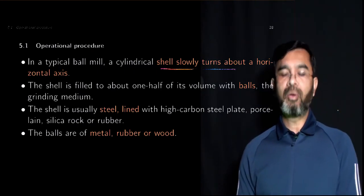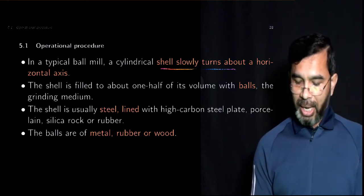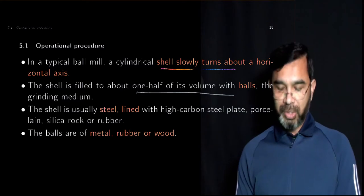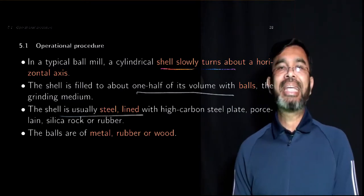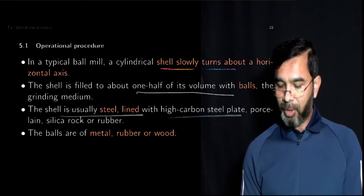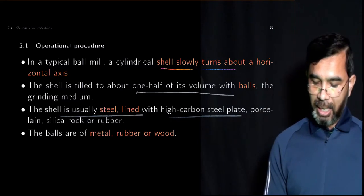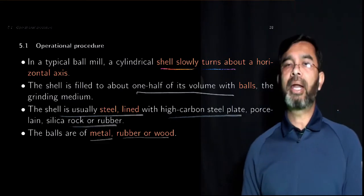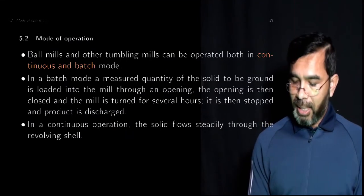The operational procedure is quite simple. Typically, in a ball mill, the cylinder slowly turns around a horizontal axis. The shell is filled with approximately one and a half of its volume with balls. The shell is usually made of steel lined with high carbon steel plate, porcelain, silica rock, or rubber. The balls are typically of metal; however, rubber and wood balls are also used.